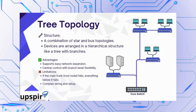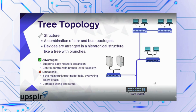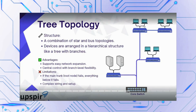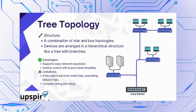Topologies common in offices include tree topology, which features branching. There is a core switch onto which sub-switches are connected, and those are connected to multiple systems. Even if one leg has thousands of PCs, you can keep extending it like a branch of a tree. The catch is that if the main trunk fails, everything fails. It involves complex wiring but is the most flexible way of networking in a large office.